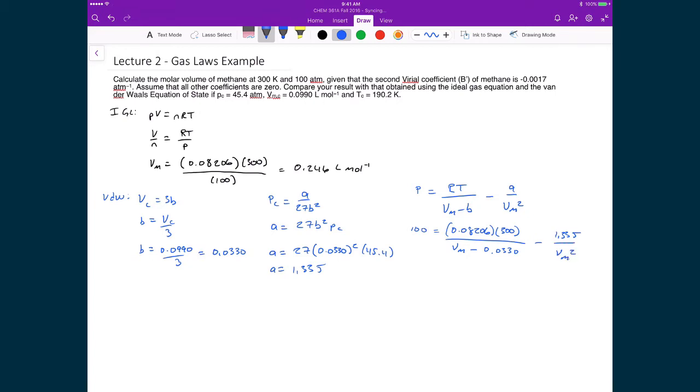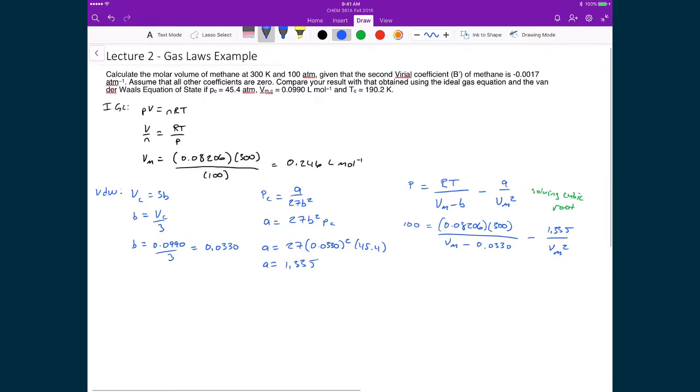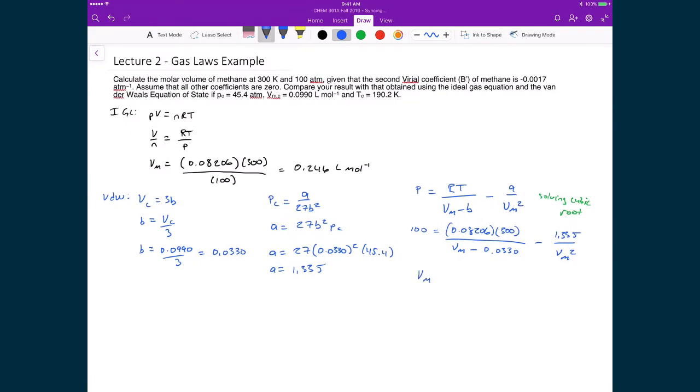Now, the solution to this, if I were to try to solve this analytically, what it involves is that it involves solving a cubic root. And this is something that I would not expect you to do by hand in this course. And so what I did is, or what I would suggest you would do in this case, is go to Wolfram Alpha, find yourself a cubic root solver, and you can basically numerically solve for the molar volume. And so what that gives us then in the end is a molar volume that is equal to 0.229 liters per mole.